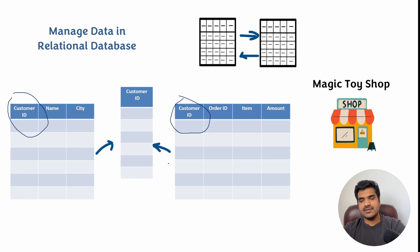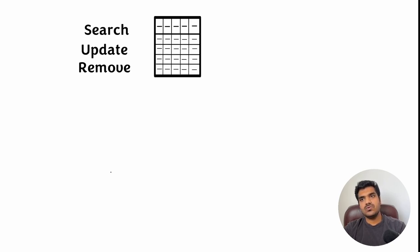With the help of SQL, you can search, update, or remove any row and column from the table. Just to have an idea about how SQL statements look like, I will show you some SQL statements. First, we have SELECT. If you want to access a particular column from this table, then you can use the SELECT statement.